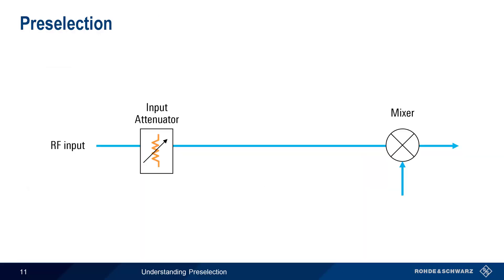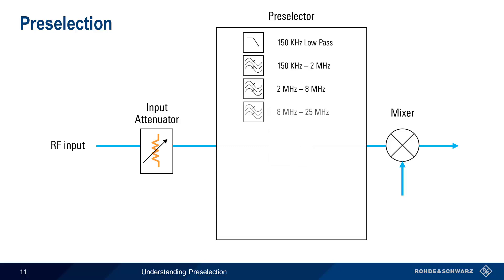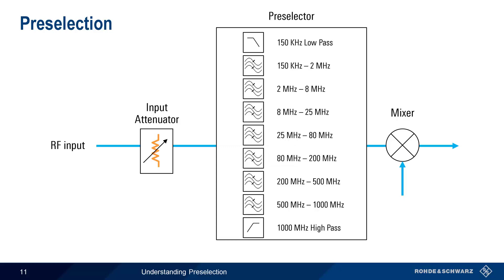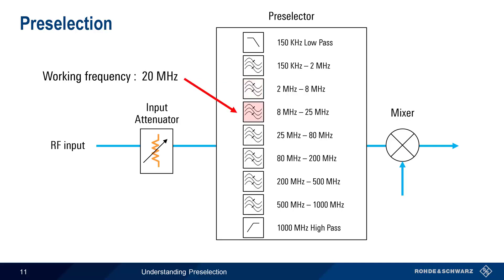Let's look at how a preselector works. Without a preselector, input power at all frequencies is passed to the mixer, regardless of working frequency. When we place a preselector in front of the mixer, our preselector — implemented as a bank of filters — has each filter passing only a certain range of frequencies. Our instrument automatically chooses which filter to use based on our current working or operating frequency. For example, if we're currently at 3 MHz, this filter is used; if we're at 20 MHz, a different filter is used. And if our instrument is scanning over a range of frequencies, the preselector automatically switches between filters at the appropriate times during the scan.